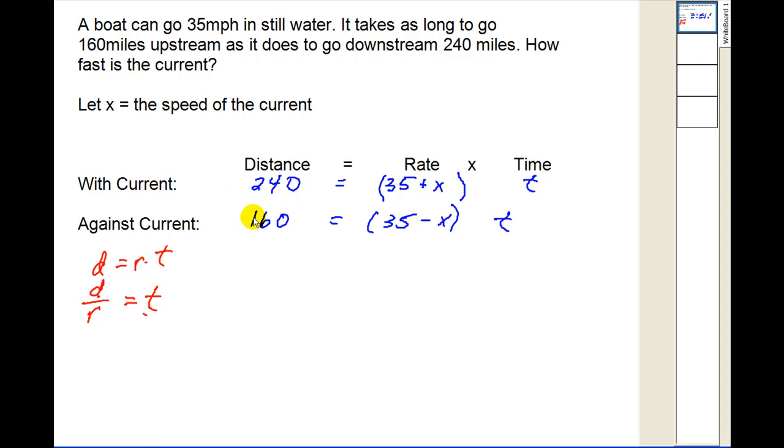So in this case, going with the current, distance divided by rate would be 240 divided by 35 plus x must equal the second distance divided by rate, which would be 160 divided by 35 minus x. Again, the reason we can set these equal to each other is because if we call this t1 and this t2, they're equal.